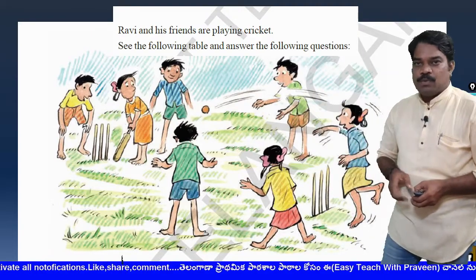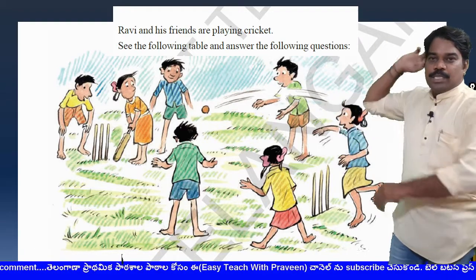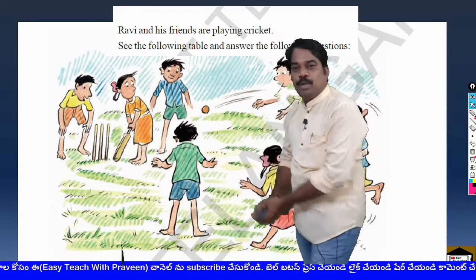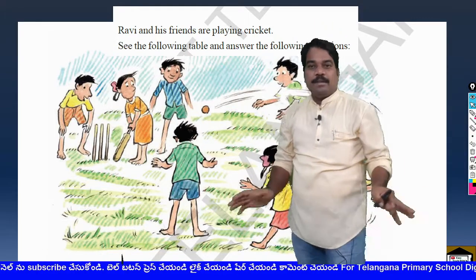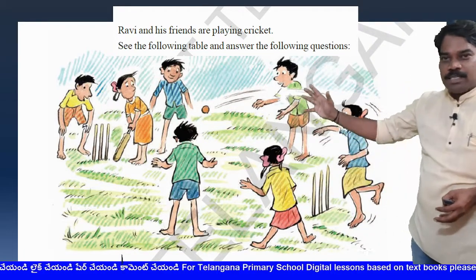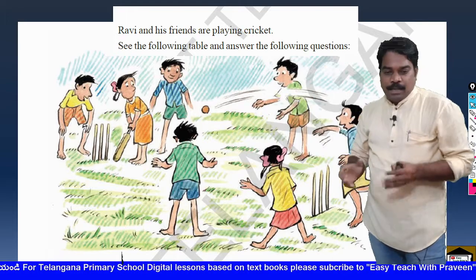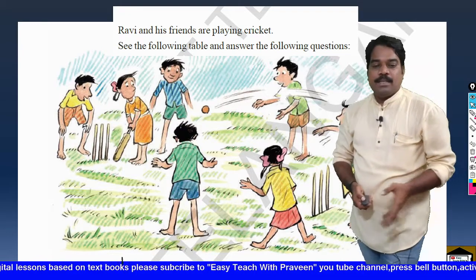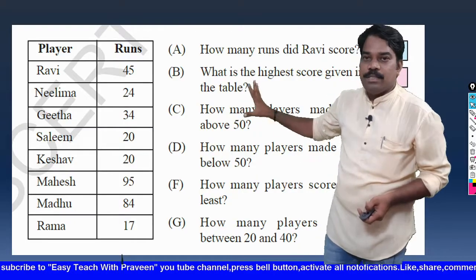Let us enter into page number 12 now. In this page we are watching a picture. What are they doing? One boy is bowling and one girl is bowling and one girl is batting. They are playing a game. What is the name of the game? The name of the game is Cricket. Ravi and his friends are playing cricket. See the following table and answer the following questions.